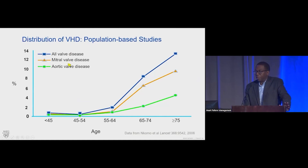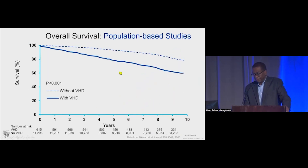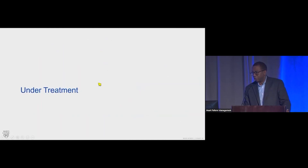Looking at the distribution of valvular heart disease in population-based studies, much of the burden is shifted towards the elderly — the older you get, the higher the risk of valve disease. Most of this is driven by mitral valve regurgitation, but the most common intervention for any valve is for aortic stenosis because it's less tolerated. And if you have valvular heart disease, your survivorship is less than people who don't — so it's common, not benign, and associated with decreased survival.